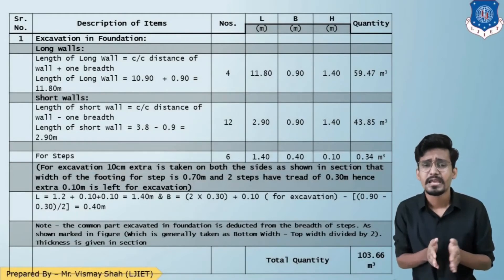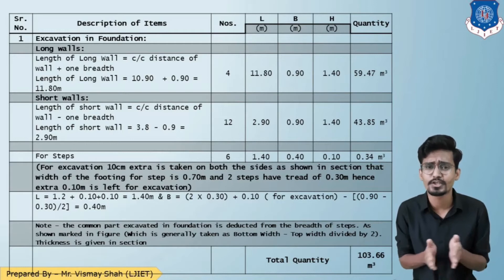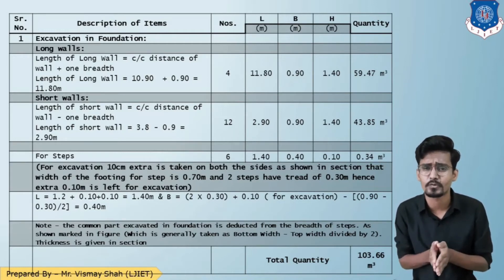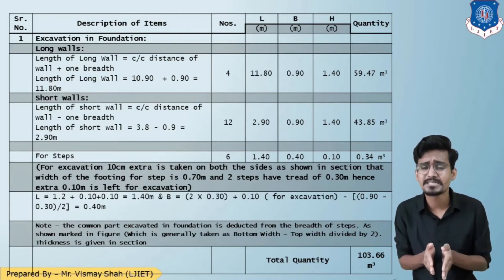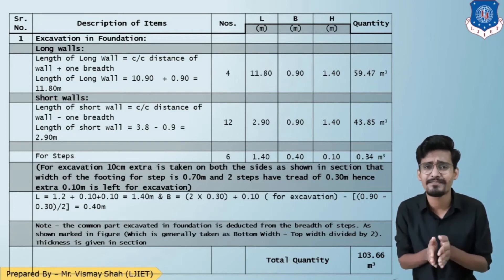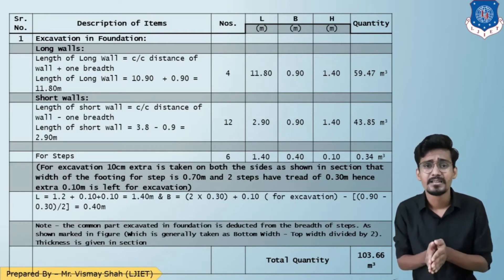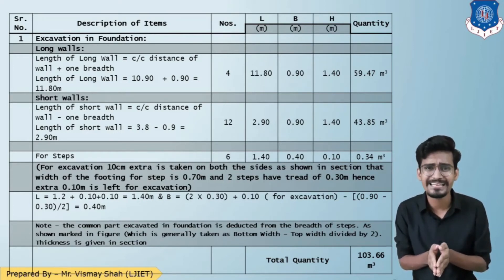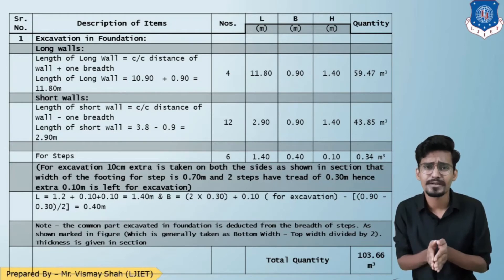Beginning with the first quantity — excavation in foundation. For long walls, the formula is: center-to-center distance plus one width. Center-to-center distance is 10.9 m and the foundation width is 0.9 m, giving a length of 11.8 m. There are 4 long walls, width 0.9 m, and depth 1.4 m, giving a quantity of approximately 59.4 cubic meters.